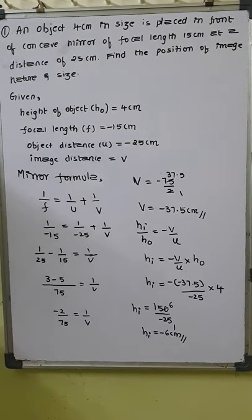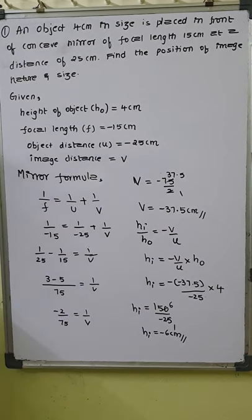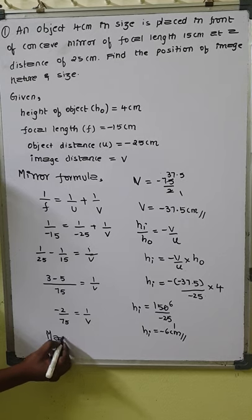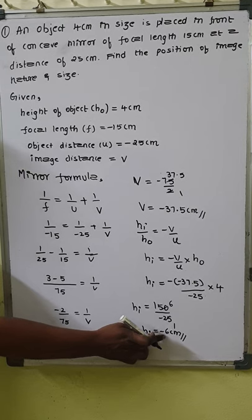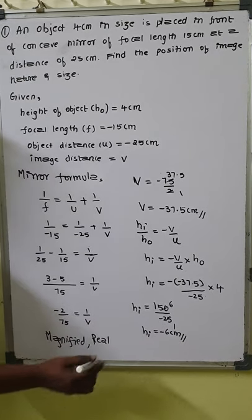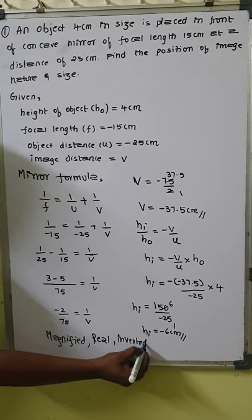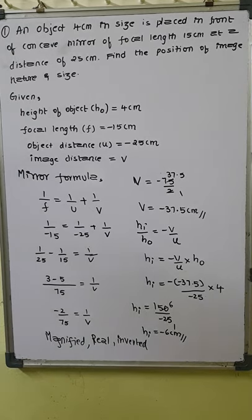From this we can clearly tell that as the object height is only 4 centimeter but the image height is 6 centimeter, the image is magnified. As the height of the image is also negative, like the image distance, the image is real. The negative sign in the height also indicates it is an inverted image. So for this question, image distance is minus 37.5 centimeter and height of image is minus 6 centimeter.